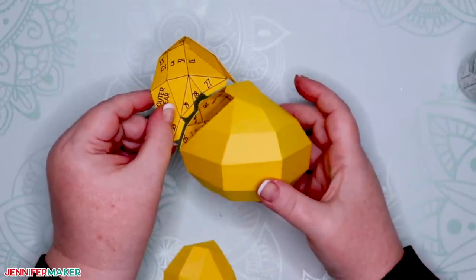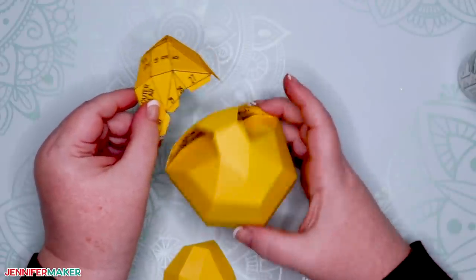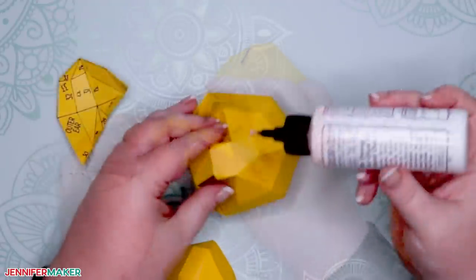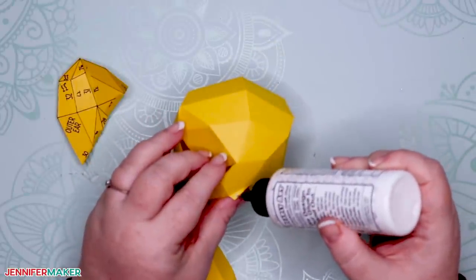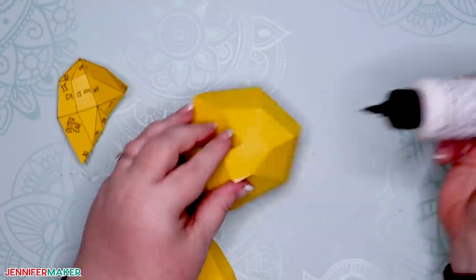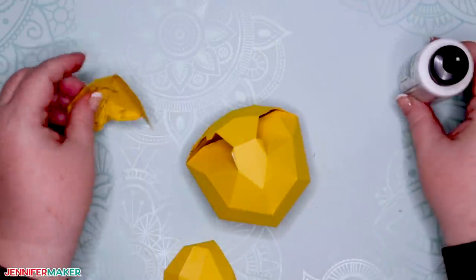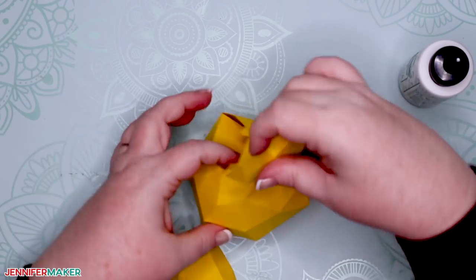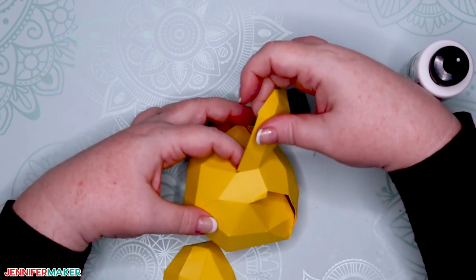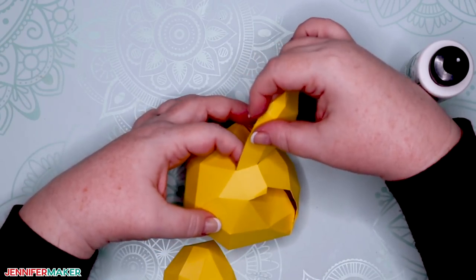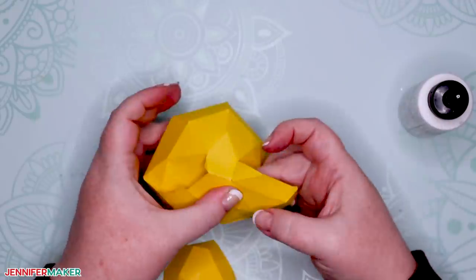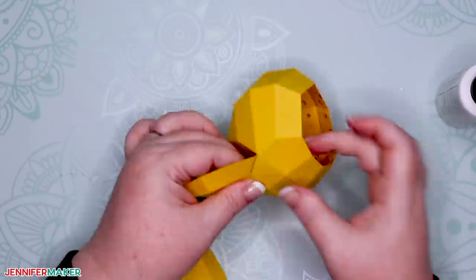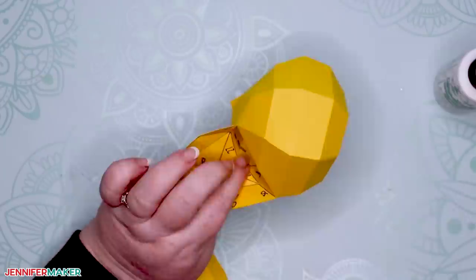All right, now it's time to attach the outer ears to the 3D cat's head. Match up the numbers just like before. The pen ink should appear on the inside of the ear. And you may be tempted to glue several tabs at once. I know I was, but I recommend you do just one at a time so that you don't get ahead of yourself and have issues with pieces slipping or not attaching properly.